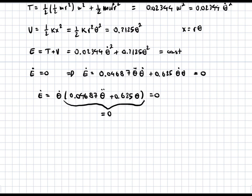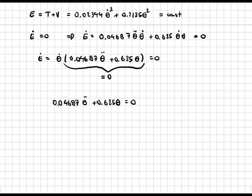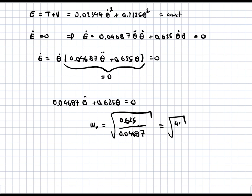Our differential equation is 0.04687 theta-double-dot plus 0.625 theta equals zero. From this, the natural frequency omega-n equals the square root of 0.625 over 0.04687, which simplifies to the square root of 40 over 3.